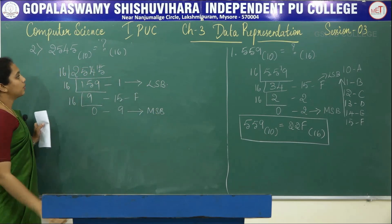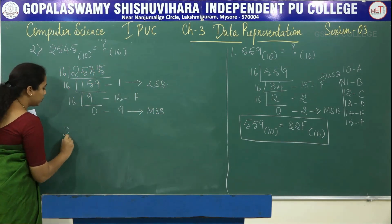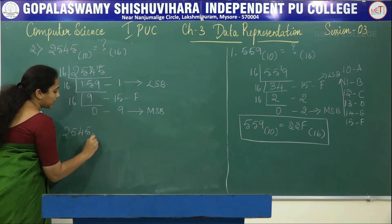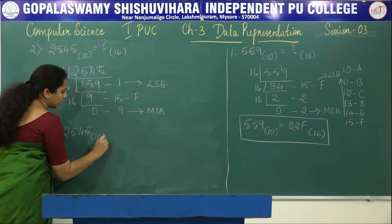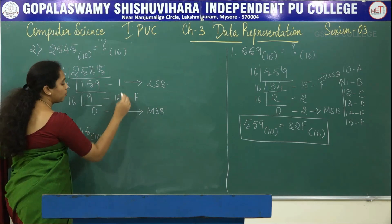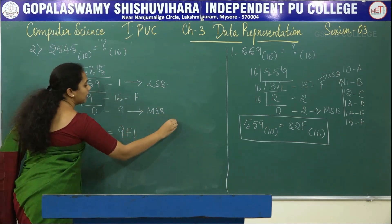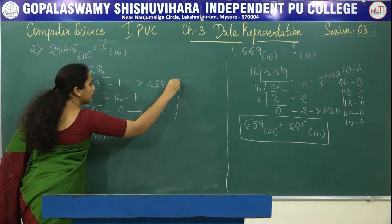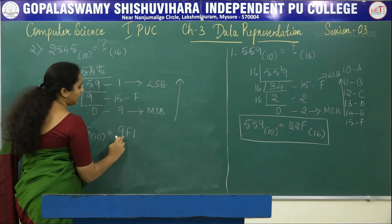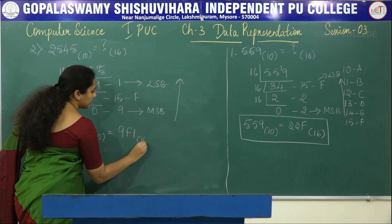So the hexadecimal equivalent of 2545 base 10 is equal to 9F1. We have to write from MSB to LSB, so the answer is 9F1 base 16.